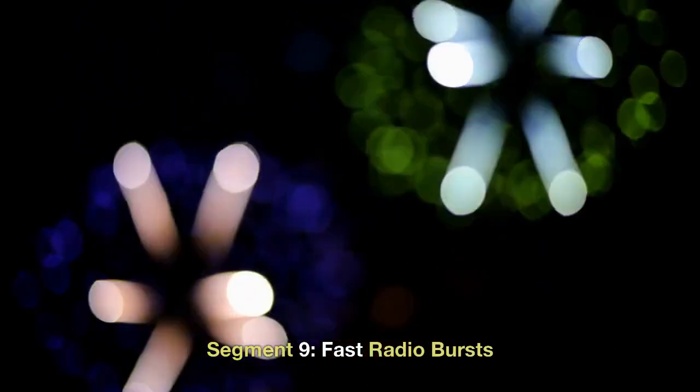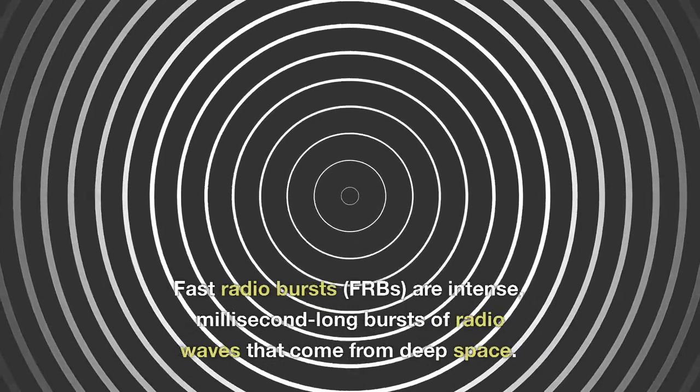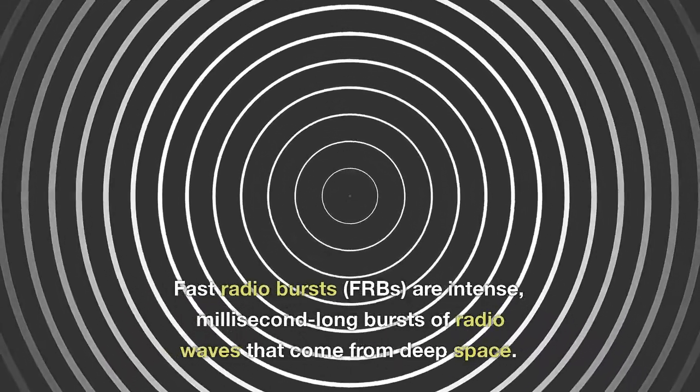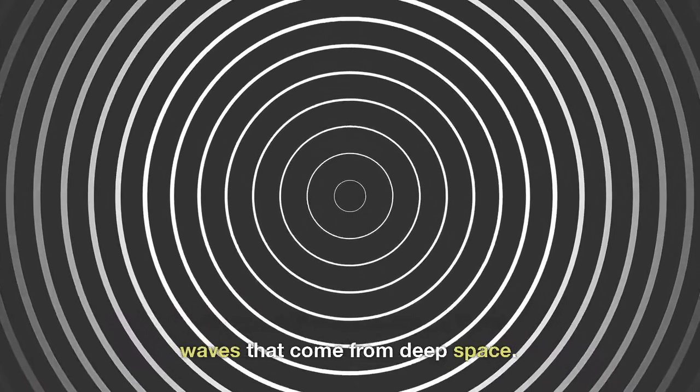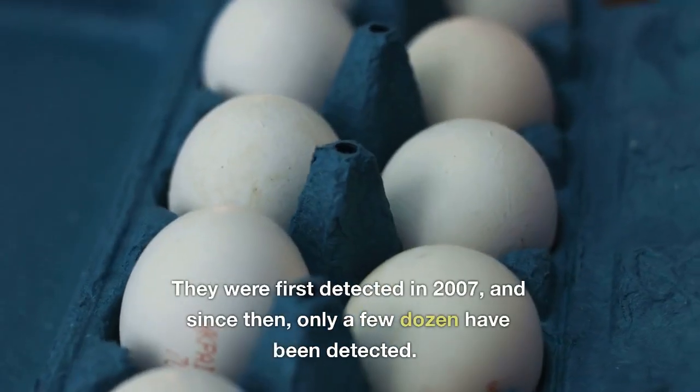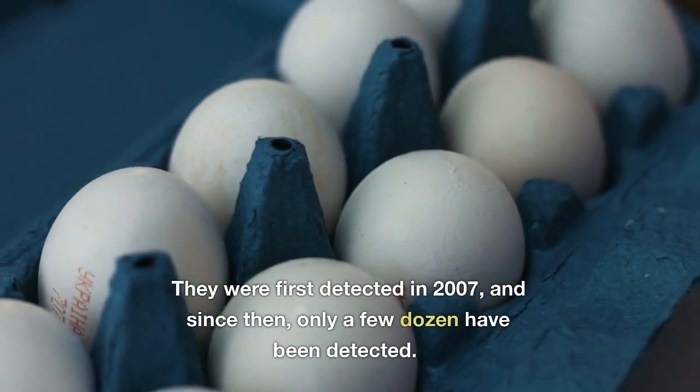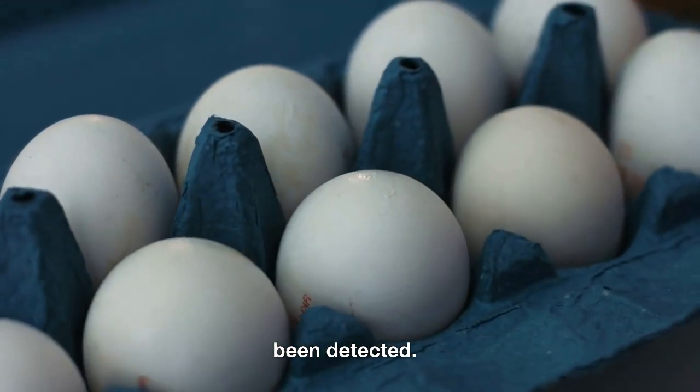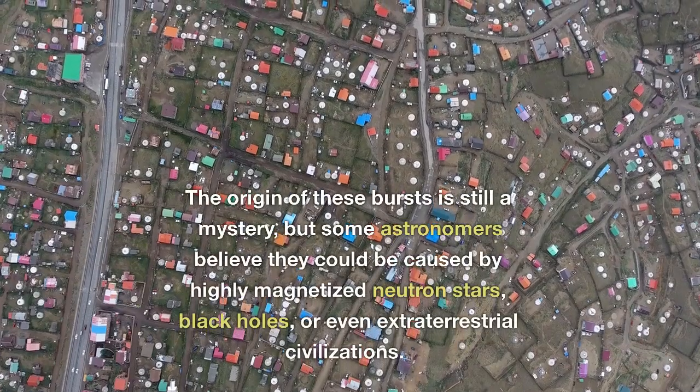Fast Radio Bursts. Fast radio bursts, FRBs, are intense, millisecond-long bursts of radio waves that come from deep space. They were first detected in 2007, and since then, only a few dozen have been detected.